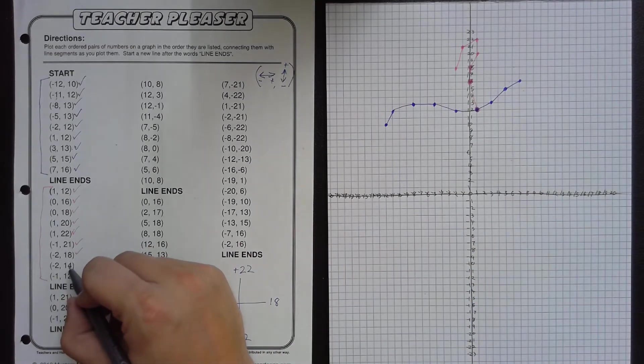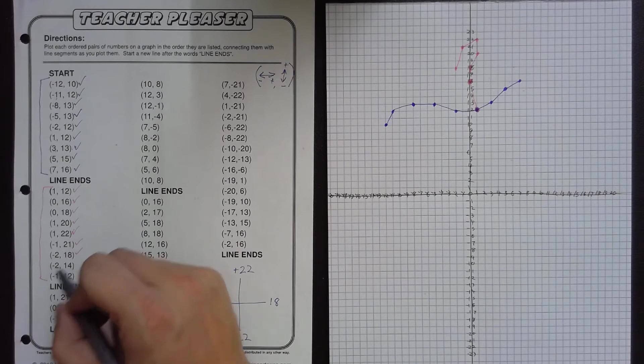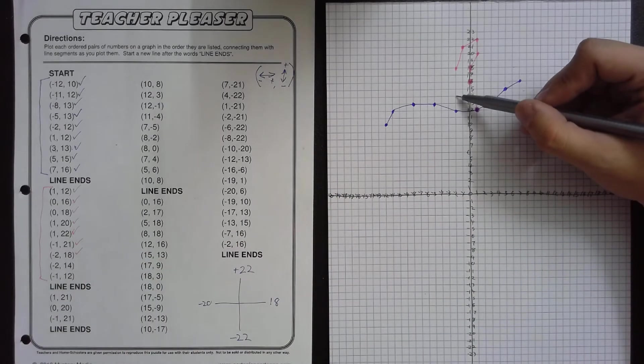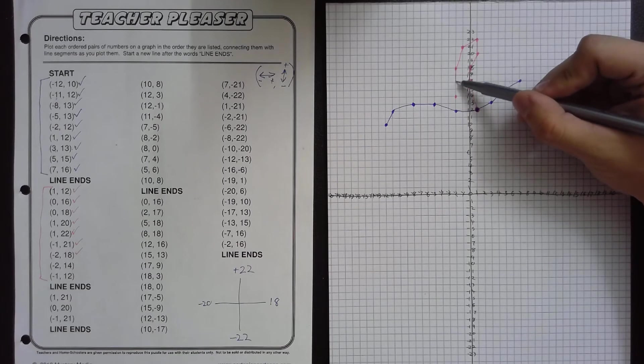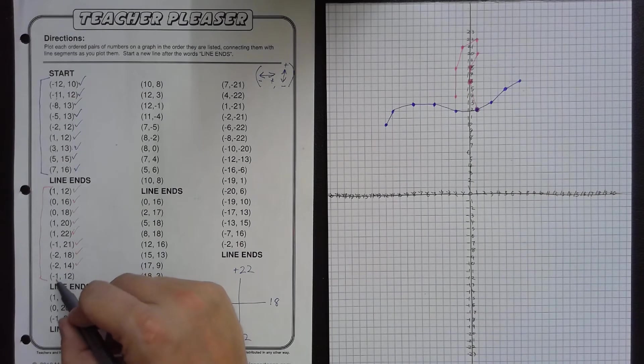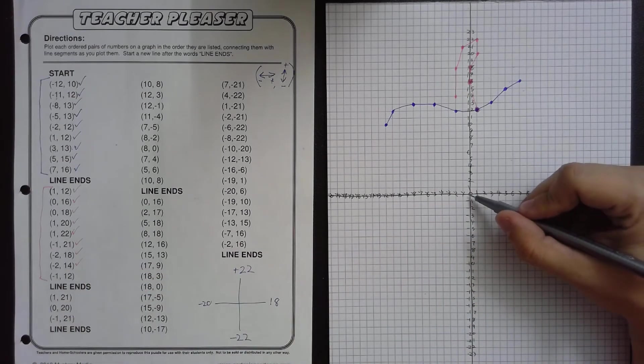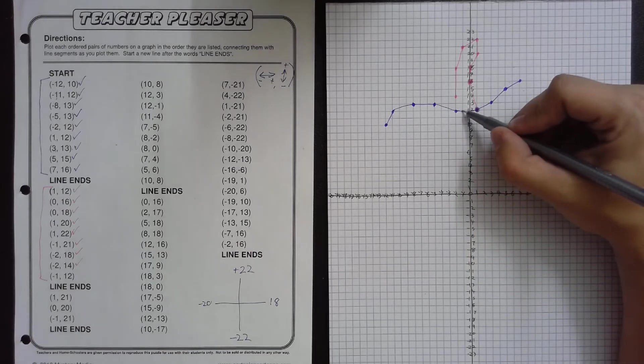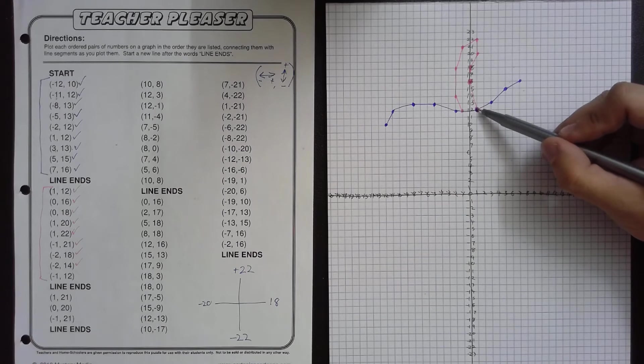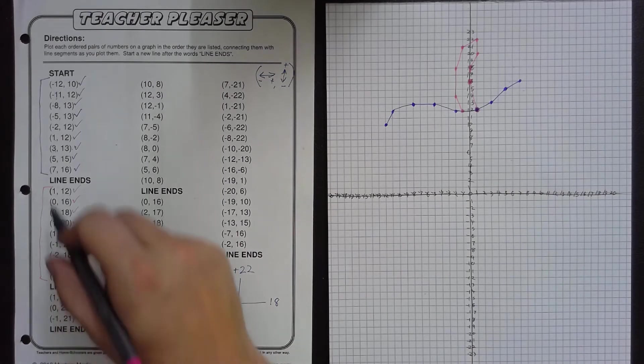Negative 2, 14. So we will go 2 to the left and 14 up. So straight down from here. After that, last one in this sequence is negative 1, 12. So negative 1, positive 12. A small mistake students sometimes make is they will reconnect it back down here at positive 1, 12. But it is actually at negative 1, 12. And that's it for this sequence.